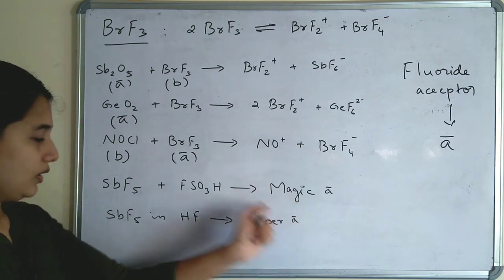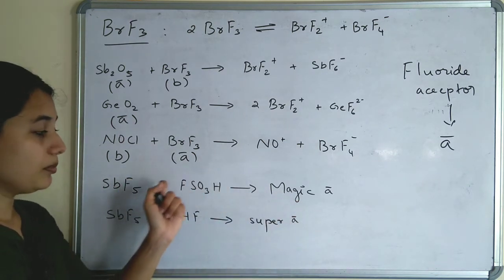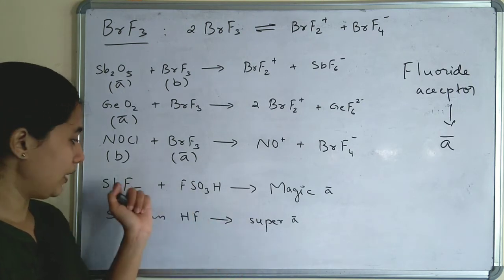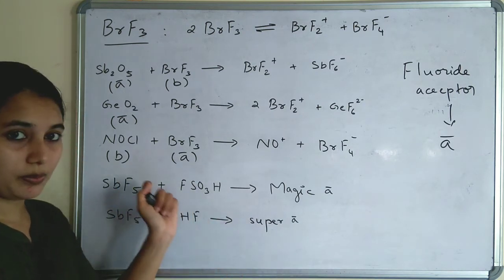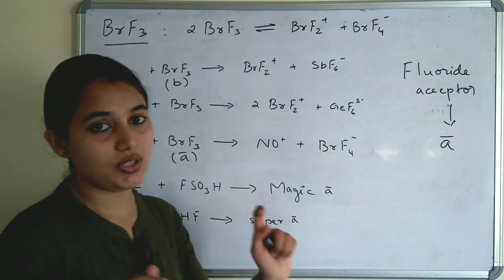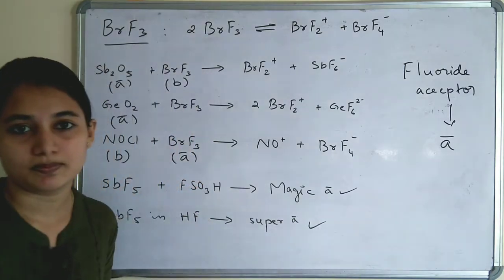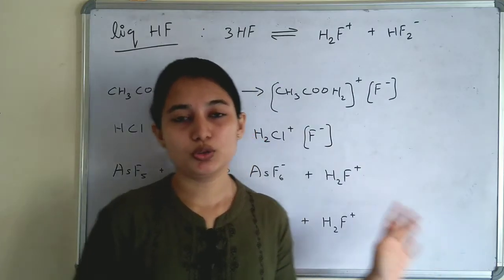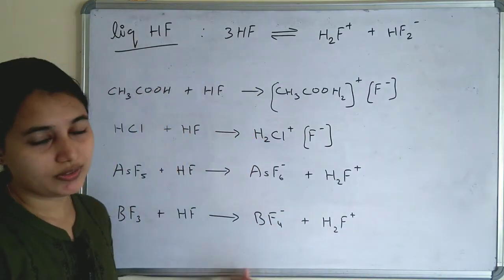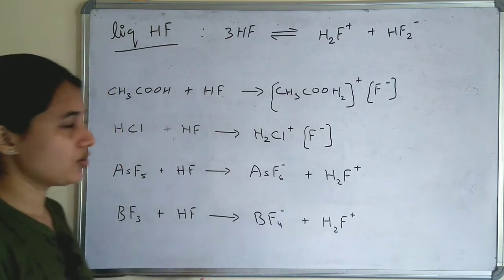Magic acid is SbF5 in FSO3H — SbF5 + FSO3H is magic acid. This is also important. Moving on to the last non-aqueous solvent: liquid HF (hydrogen fluoride).